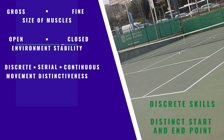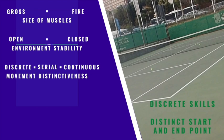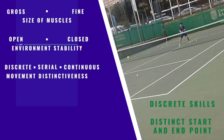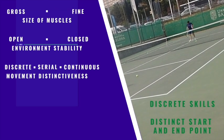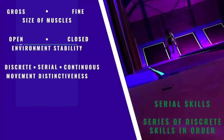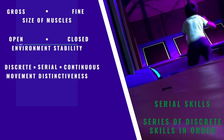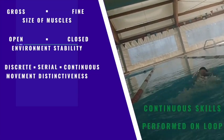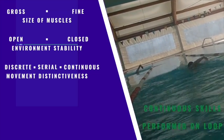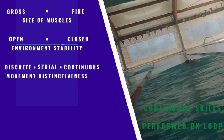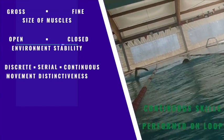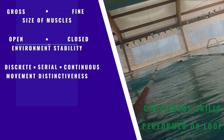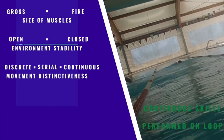Next, we look at movement distinctiveness. Discrete skills have a distinct start and end point, such as a tennis shot. Serial skills are a series of discrete skills in order — a gymnastics or trampoline routine, or a long jump with a run and then a jump. And a continuous skill is performed on a loop — running, swimming, cycling — where it's not really clear where the start and end of the movement is.